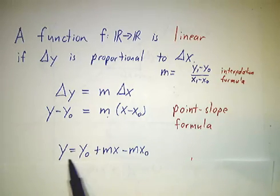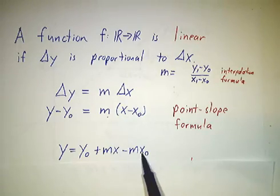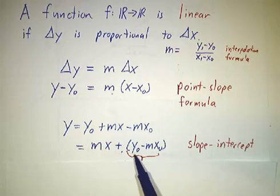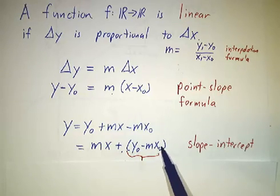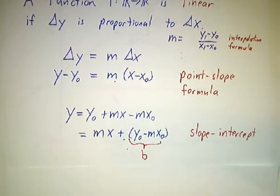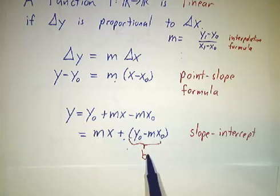So we put the y0 on the other side and we get y is y0 plus, expand this out, mx minus mx0, or that's mx plus y0 minus mx0. That's just some number, we'll call it b. And this is slope intercept form. This is the form you've probably seen for the equation of a line. y is mx plus b.